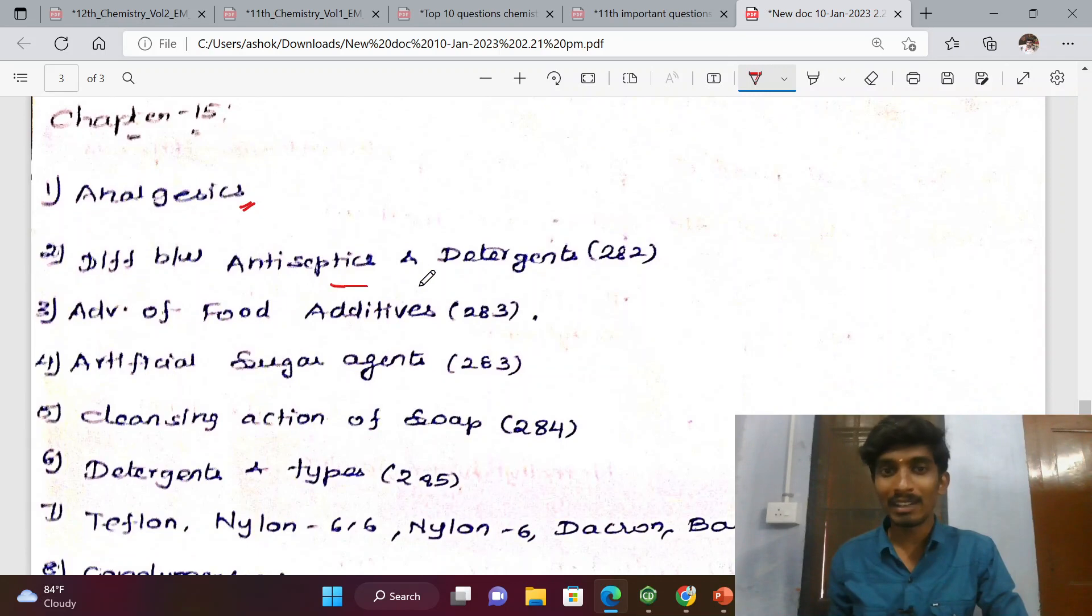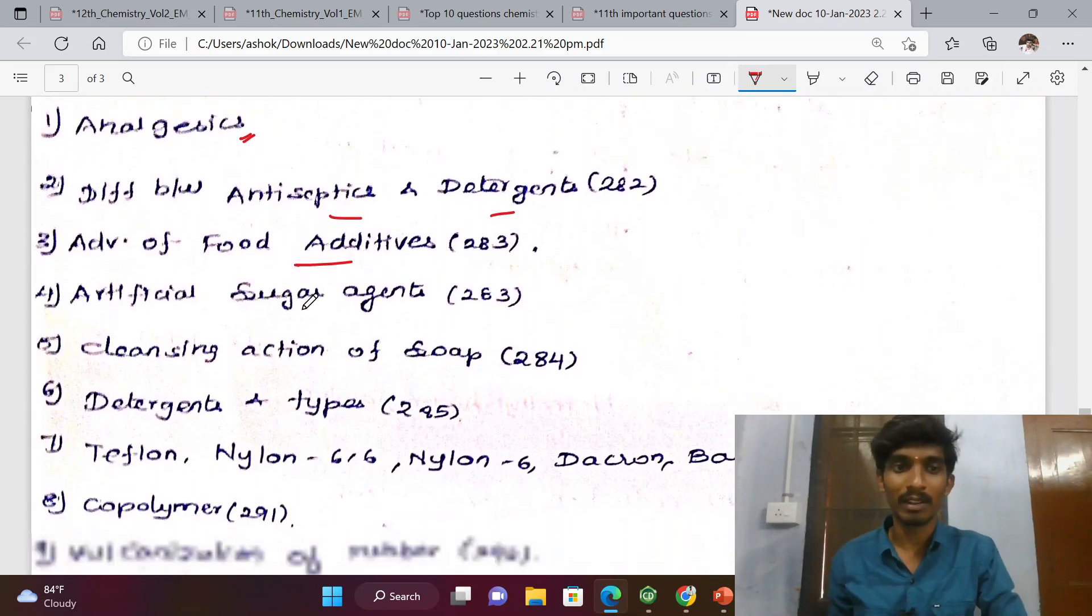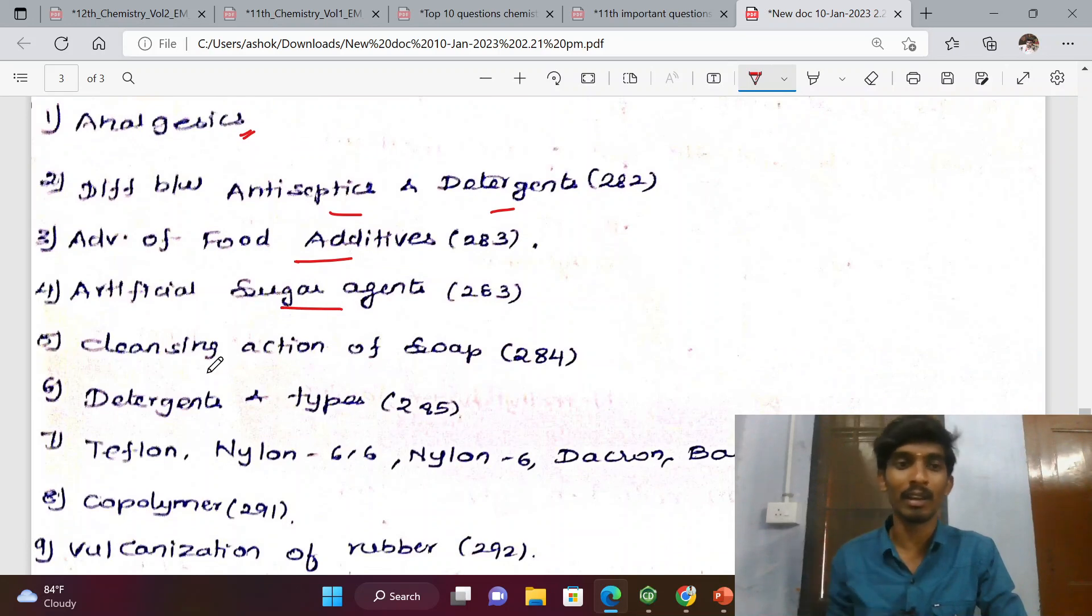Last lesson: Analgesics, antiseptic detergents (difference), food additives (advantages), artificial sugar agents, and cleansing agents including soap and detergents with their types.